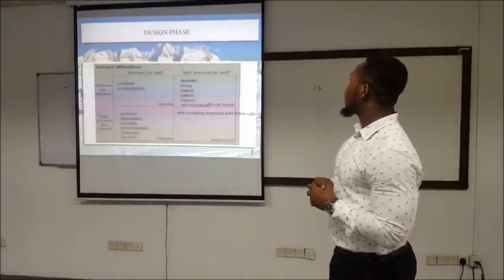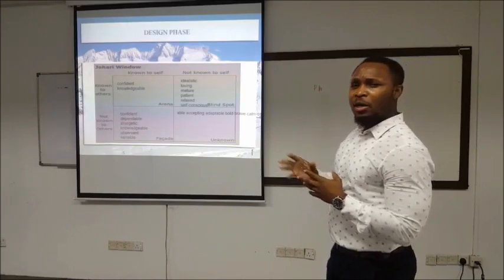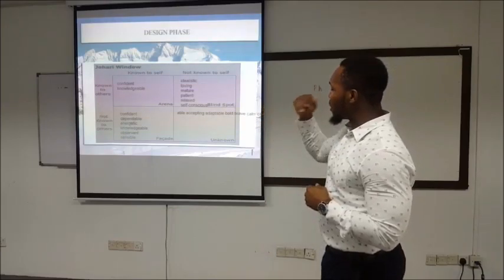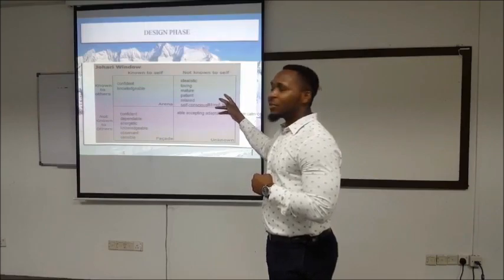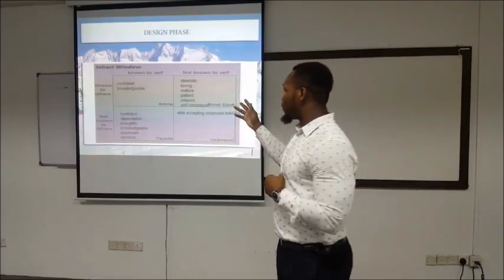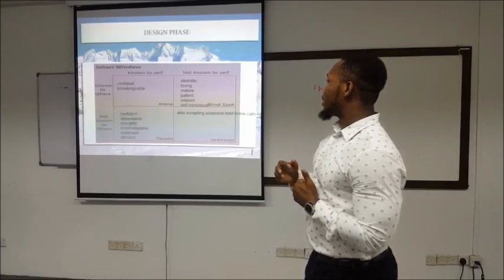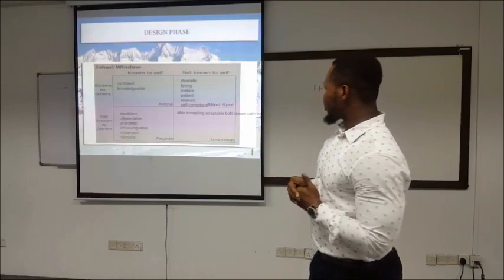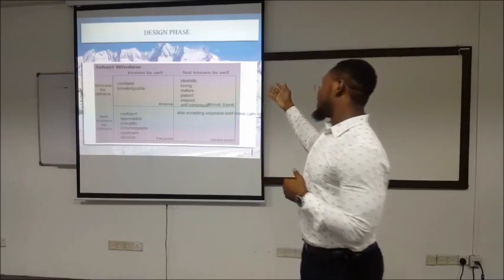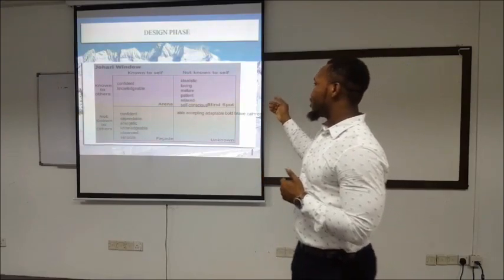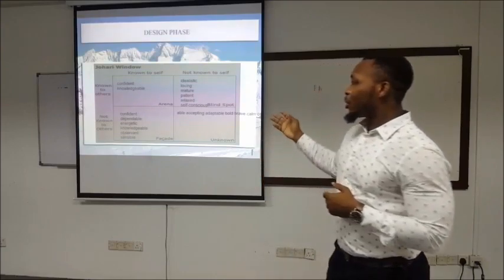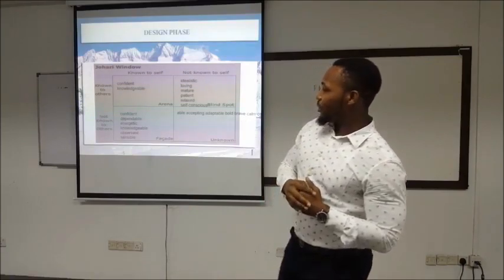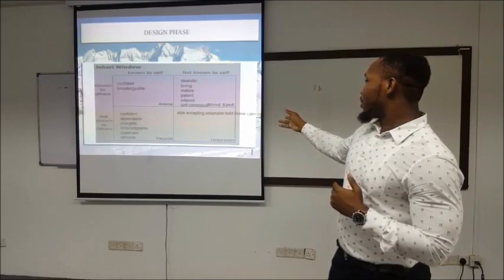Moving on, I'm going to analyze my characteristics based on the Johari Window. Looking at this chart, the characteristics known to myself include confidence and being quite knowledgeable, which my colleagues also confirmed. Characteristics I knew but didn't openly discuss include being idealistic, loving, mature, patient, relaxed, and self-conscious. Qualities I felt I had that others recognized include confidence, dependable, energetic, knowledgeable, observant, and sensible.